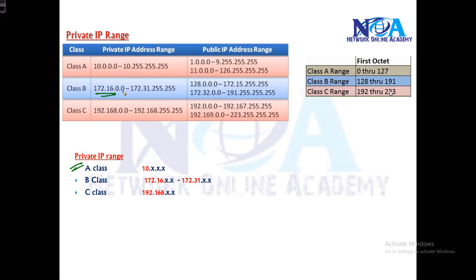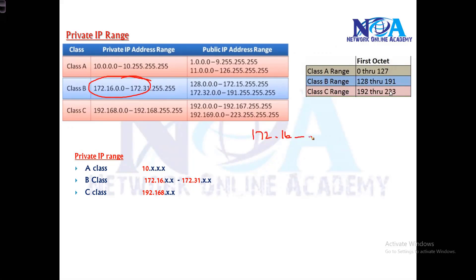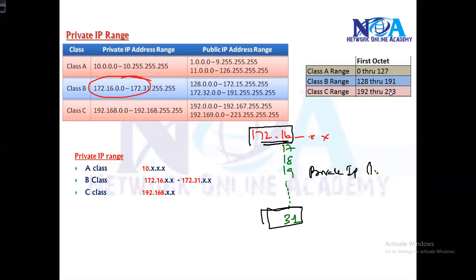In Class B, the range is from 128 to 191, giving around 16,000 subnets. Out of those, only 16 subnets are private — from 172.16 up to 172.31. So any address in the range 172.16 to 172.31 is your private IP range in Class B. All other addresses, such as 128.x, 129.x, up to 172.15, and from 172.32 to 191, are public. Just remember: 172.16 to 172.31 is private.